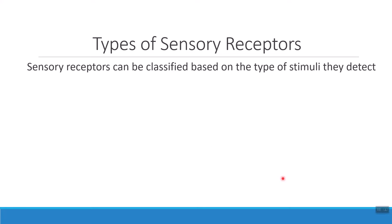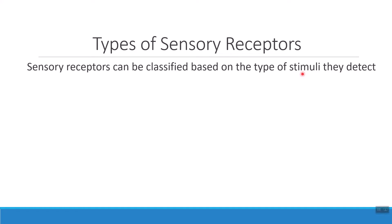The next way we can classify receptors is based on what they're detecting — the type of stimuli that they're able to detect. When we talk about different types of receptors based on stimuli, there are many specific names. Let's start with photoreceptors. Photoreceptors are the kinds of receptors that we have in the retina of our eyes. Photoreceptors detect light waves. The speed at which the light vibrates helps us figure out what color we're looking at, and the location the light comes from helps us determine shapes.